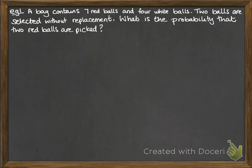For example, a bag contains seven red balls and four white balls. Two are selected without replacement. The fact that they're not being put back means the probability of the second pick is conditional on the first pick. We want the probability that two red balls are selected. So that's seven elevenths for the first ball, and then once we've taken that out there will be six red balls left out of ten — so seven elevenths times six tenths.